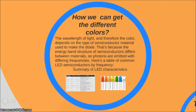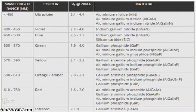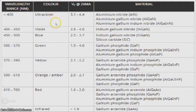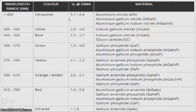The color of an LED depends on the type of semiconductor material used to make the diode. The energy band structure differs between semiconductor materials, so photons are emitted with different frequencies. Here is a table of common LED semiconductors by frequency, showing the material, color, and band gap for each type. The color of the emitted light can be determined from the band gap of the material.